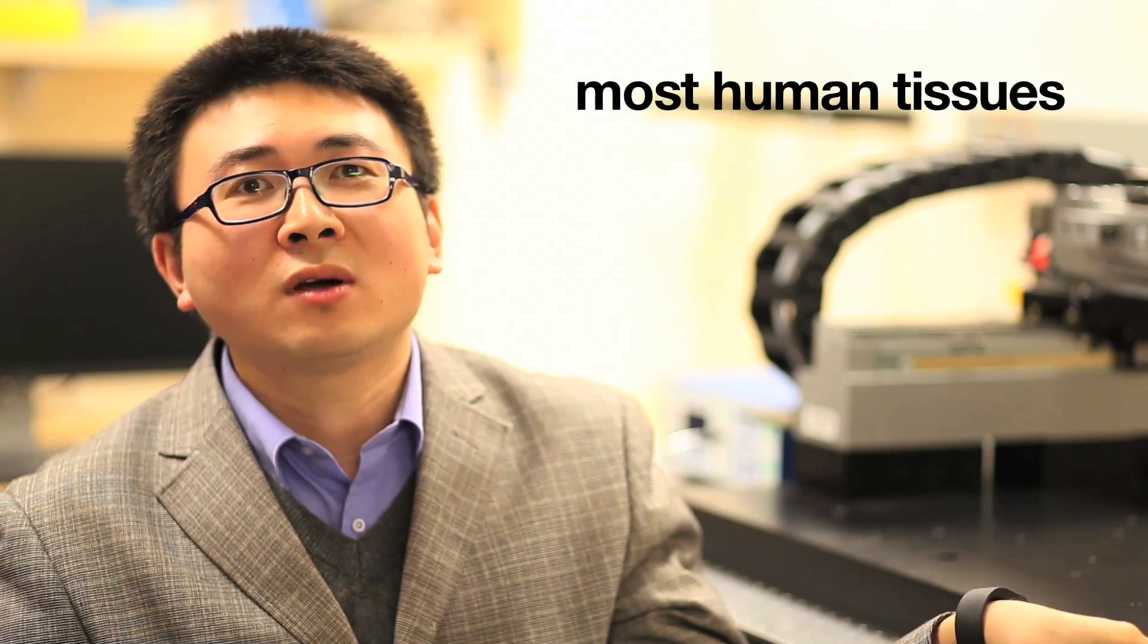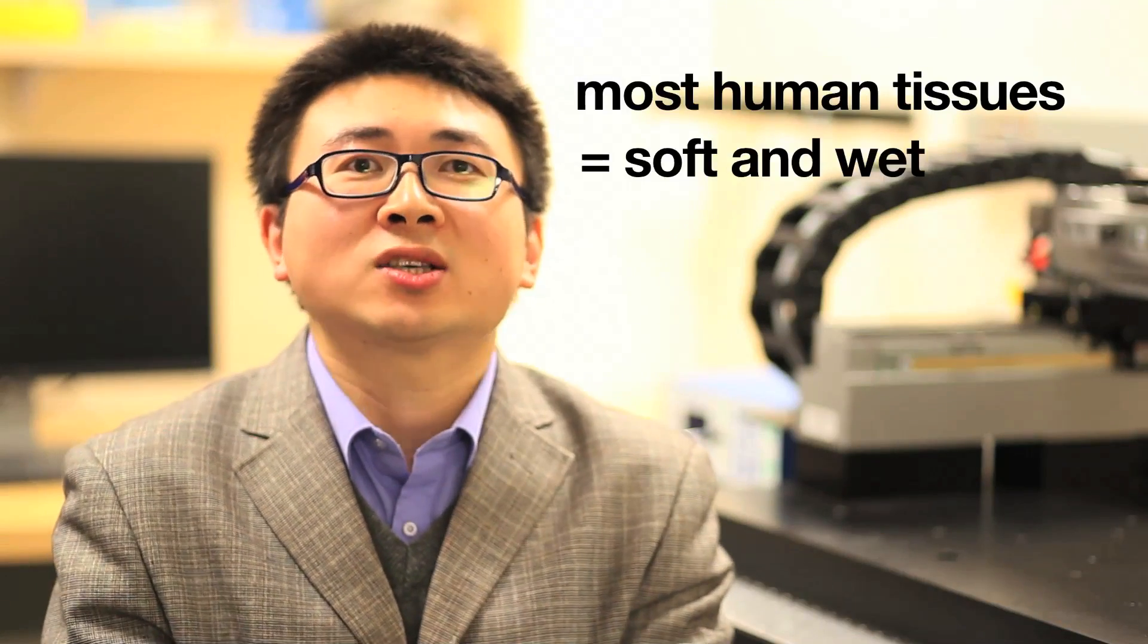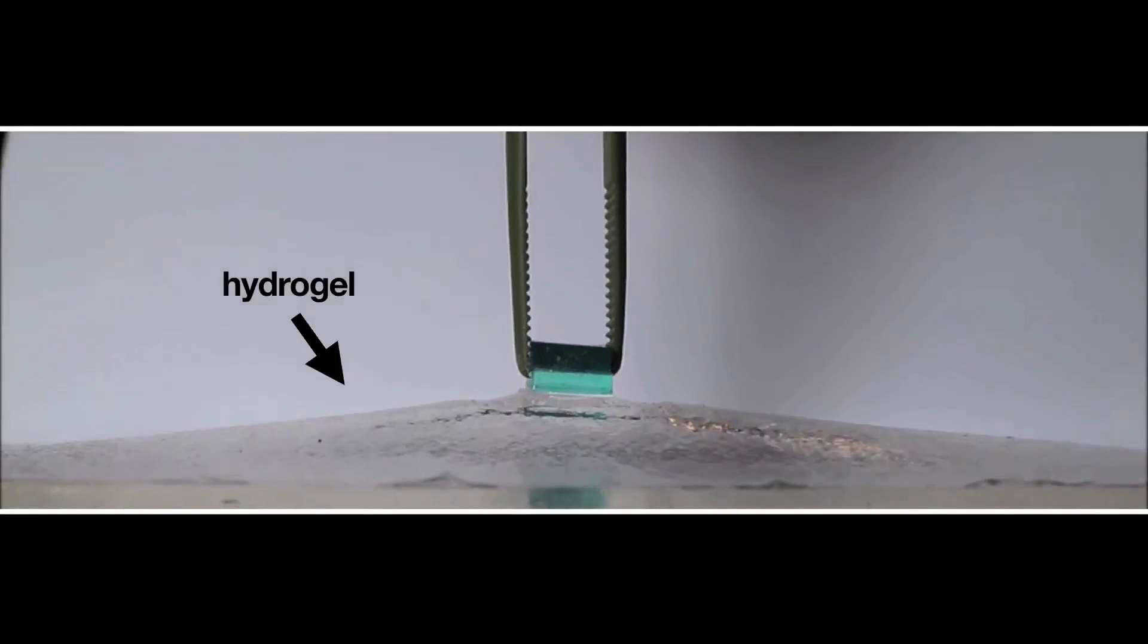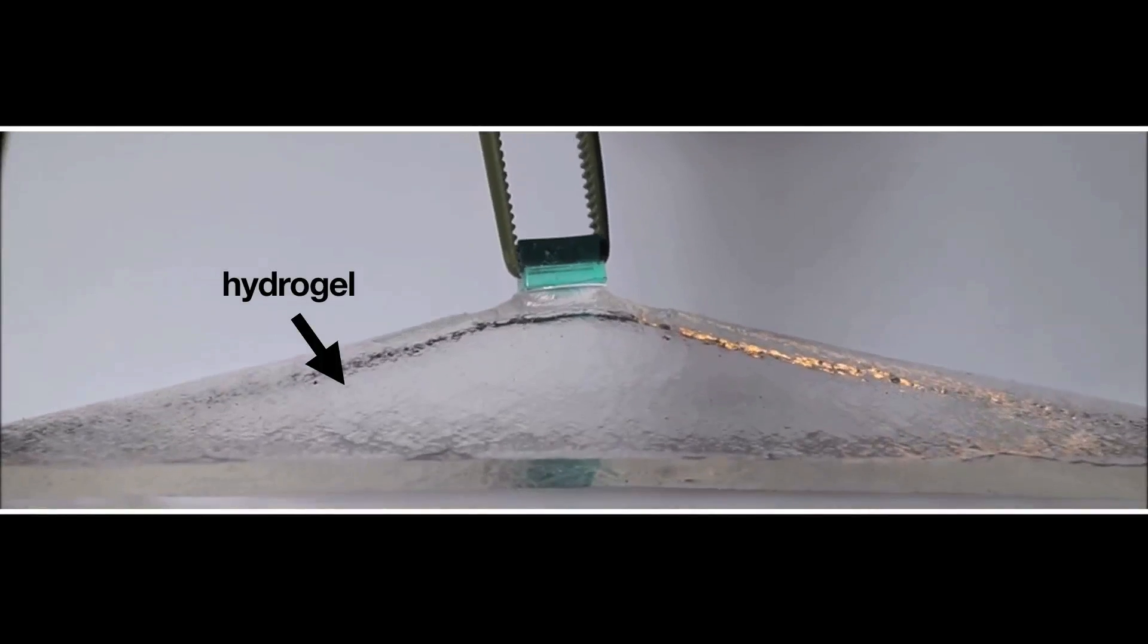On the other hand, most human tissues are soft and wet, which are hydrogels, polymer networks infiltrated with water.